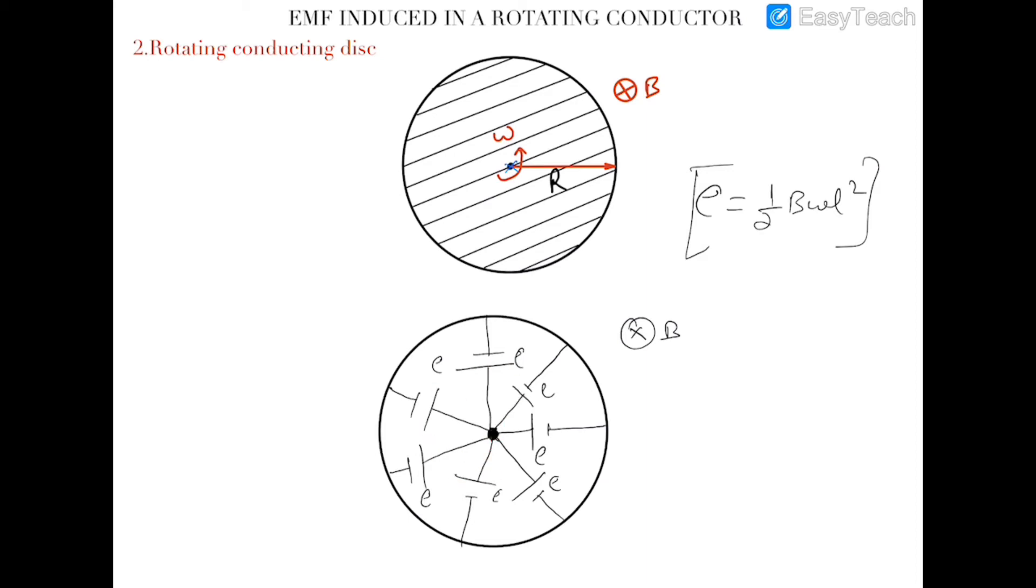Because one terminal of all cells are connected at center and the other terminal is connected at the periphery of the ring which is this disc, so these all are in parallel. And in parallel combination the equivalent EMF of the circuit is equal to the EMF of any one cell.